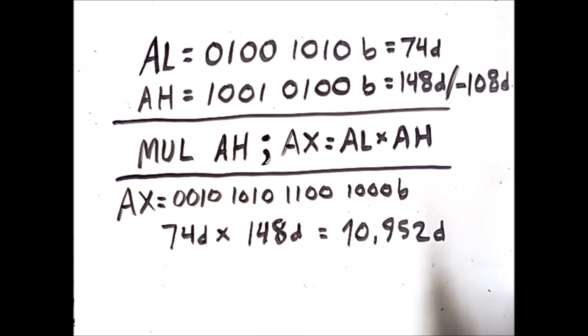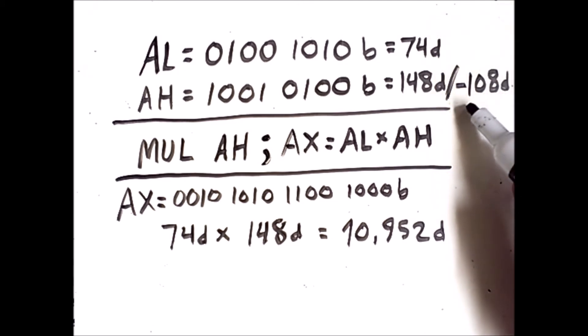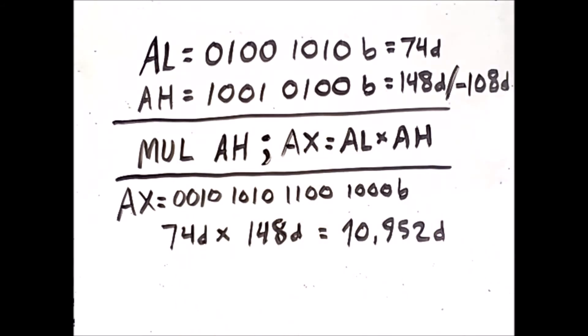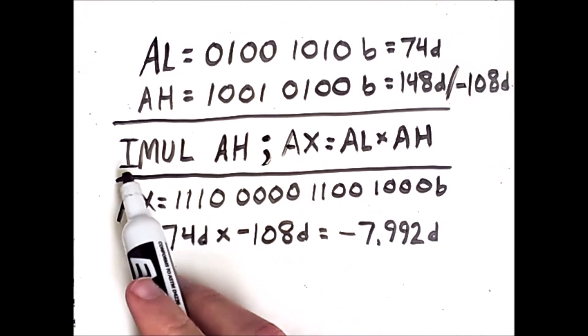If we instead want to multiply 74 by negative 108, we have to use a different command that treats this sequence of bits as a negative number. That command is IMUL. So now, all I've done is change this command from MUL to IMUL.